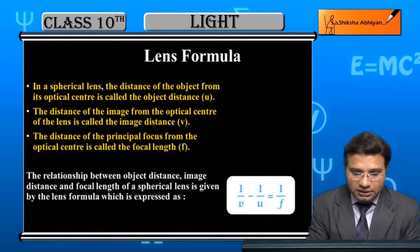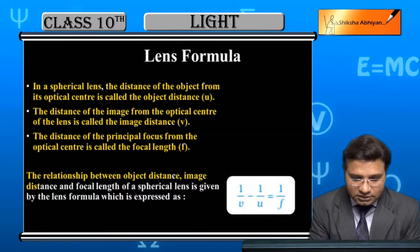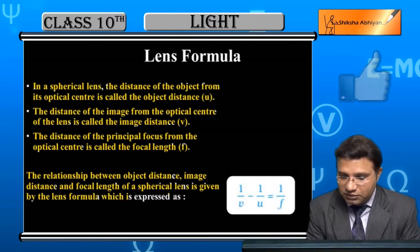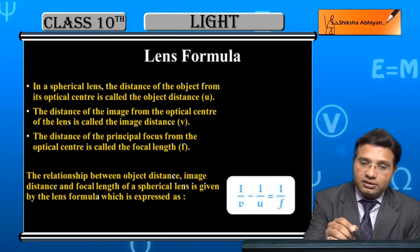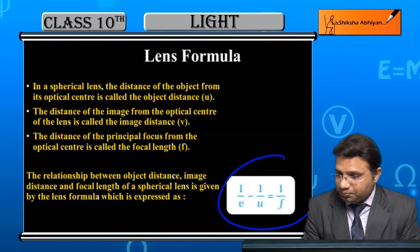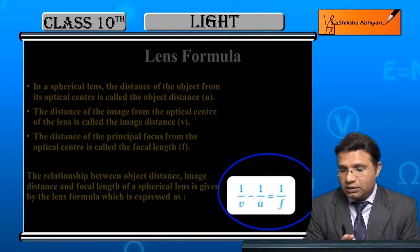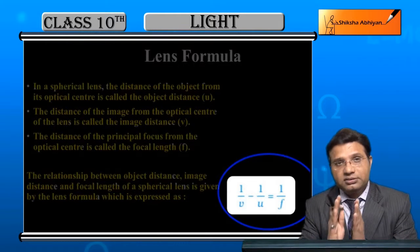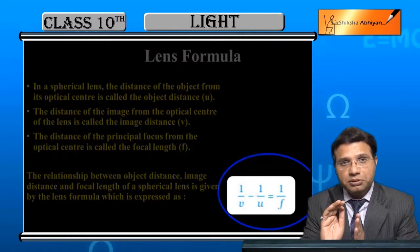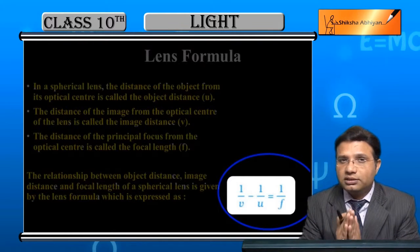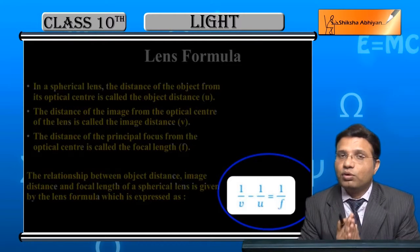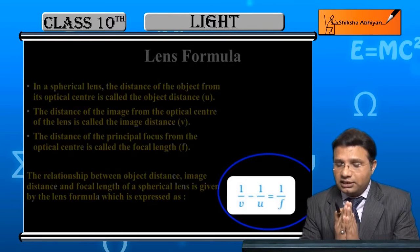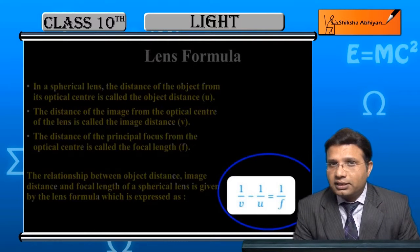The relationship between object distance, image distance, and focal length of a spherical lens is given by the lens formula, expressed as: 1/v − 1/u = 1/f. Image distance का reciprocal minus object distance का reciprocal equals focal length का reciprocal — यह है lens formula, जो v, u, और f को spherical lens से relate करता है।